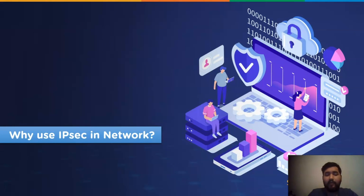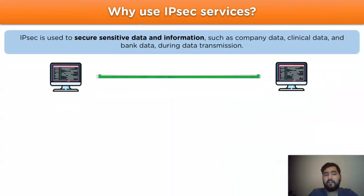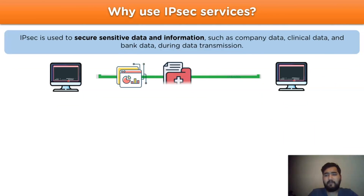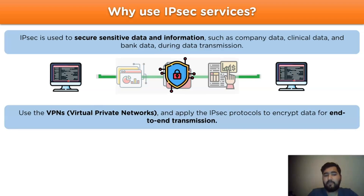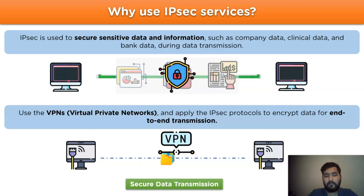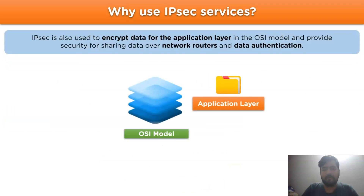Now let's move on to why we use IPSec in a network. IPSec is used to secure sensitive data and information, such as company data, clinical data, bank data, and various sensitive information regarding an institution, which are transmitted over a network channel. VPNs — virtual private networks — apply IPSec protocols to encrypt data for end-to-end transmission. IPSec is also used to encrypt data for the application layer in the OSI model and provide security for sharing data over network routers, along with data authentication.